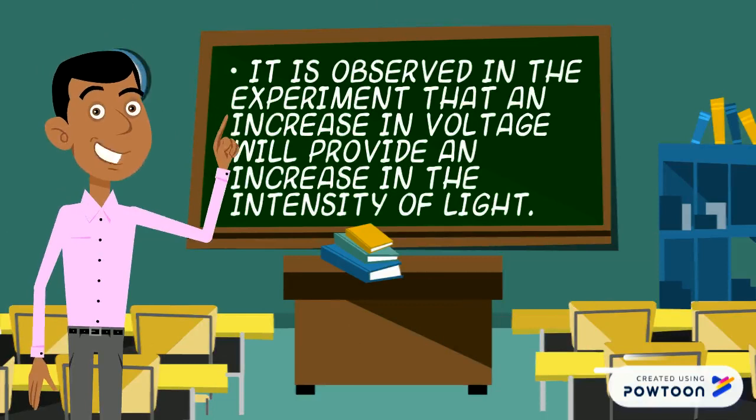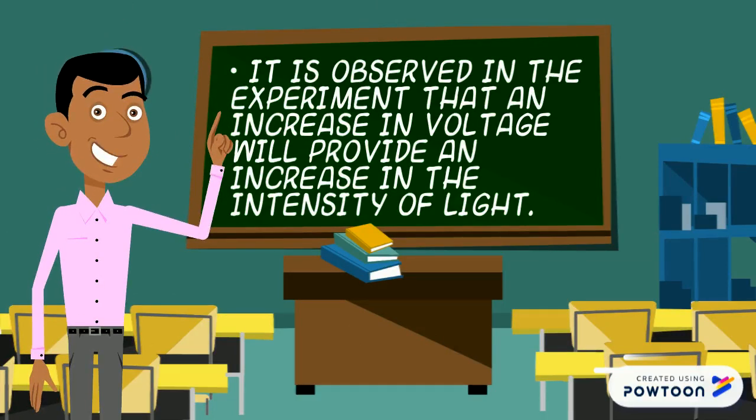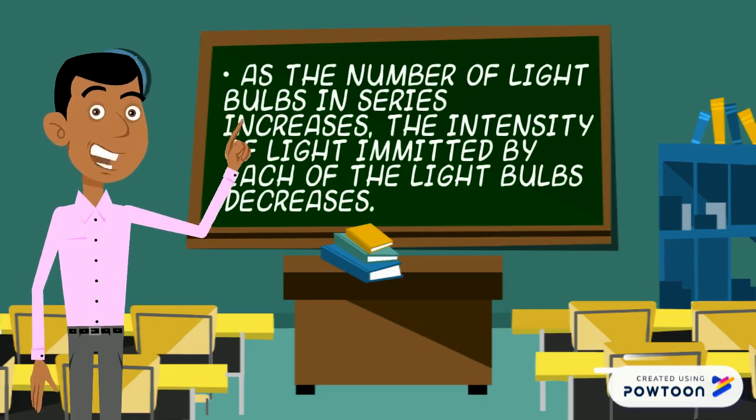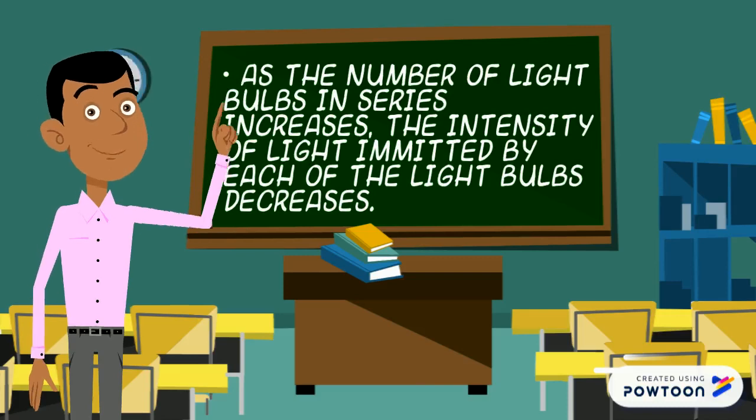It is observed in the experiment that an increase in voltage will provide an increase in the intensity of light. As the number of light bulbs in series increases, the intensity of light emitted by each of the light bulbs decreases.